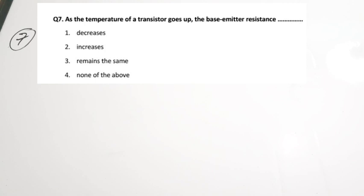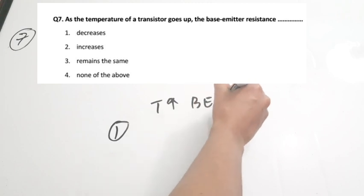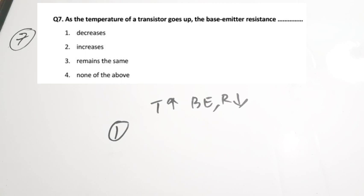Question 7: As the temperature of a transistor goes up, the base-emitter resistance does what? When temperature increases, electrons break bonds and free carriers are generated, causing current to increase. Increasing current indicates decreasing resistance. So as temperature goes up, base-emitter resistance decreases. Correct answer is option 1.